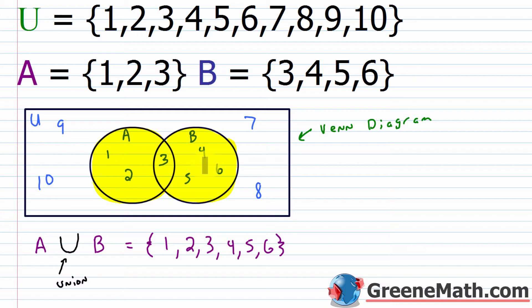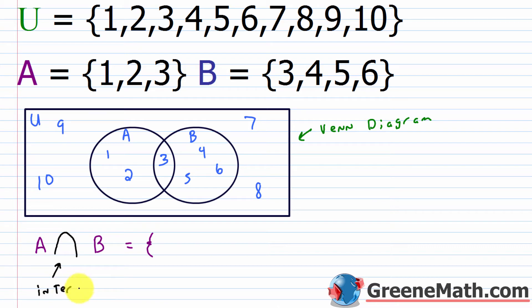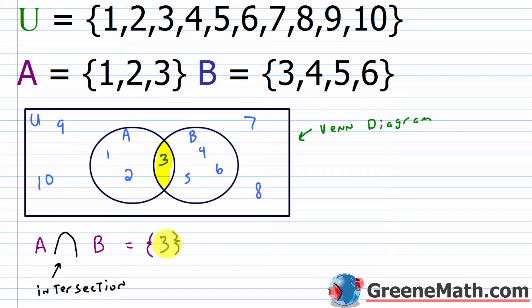The other thing to talk about is the intersection. The intersection symbol looks like an upside-down U. The intersection of A and B is the set of all elements that belong to both A and B — that's your overlap section. Looking at the Venn diagram, A intersect B has one element: 3.